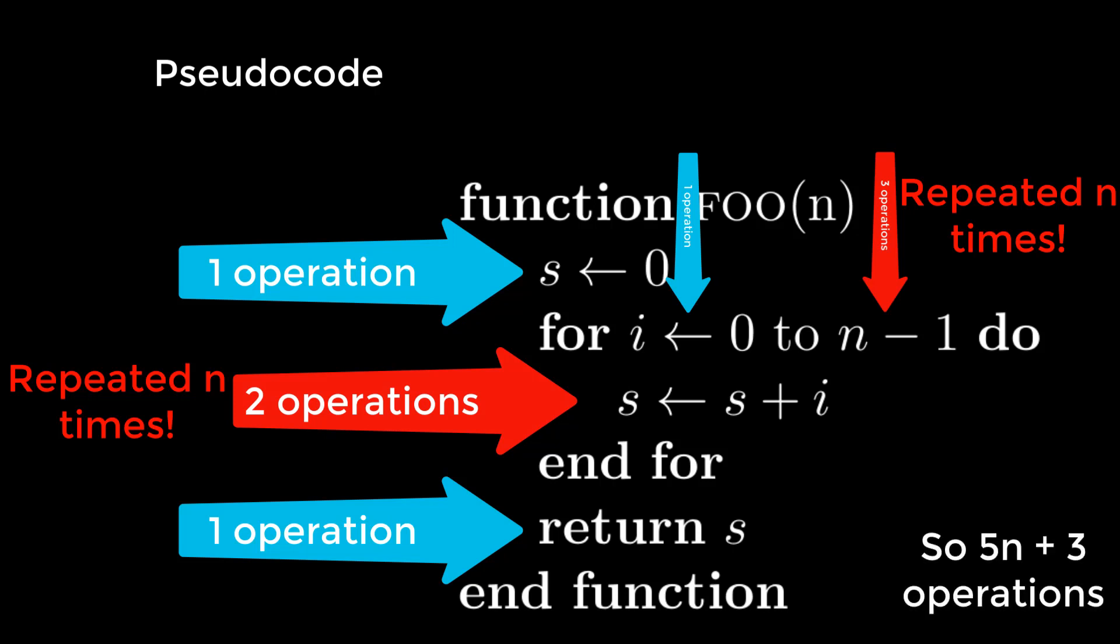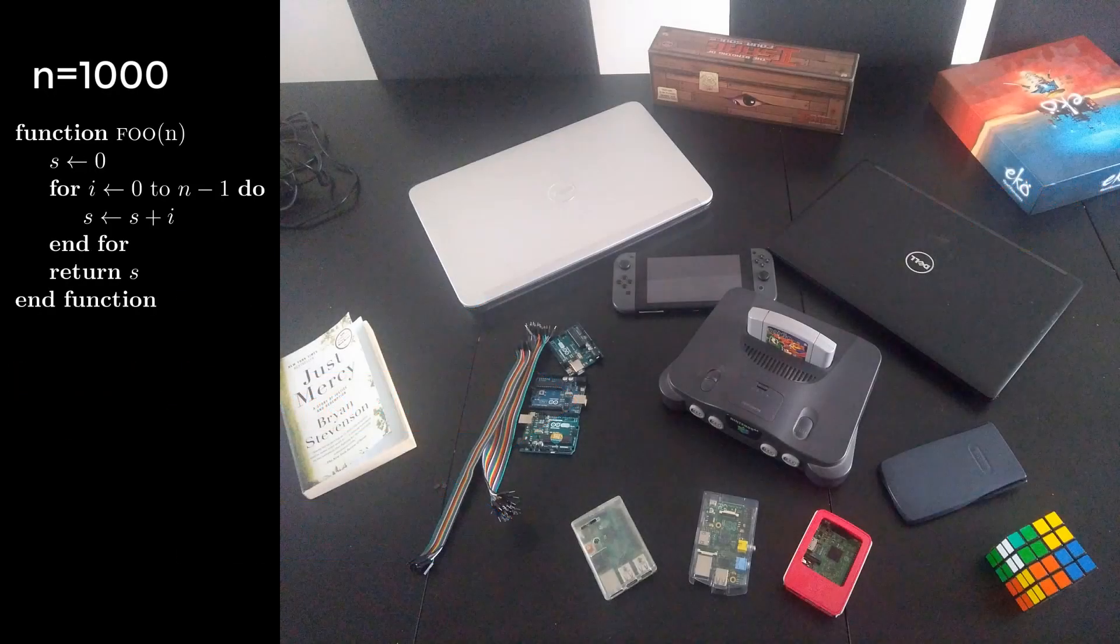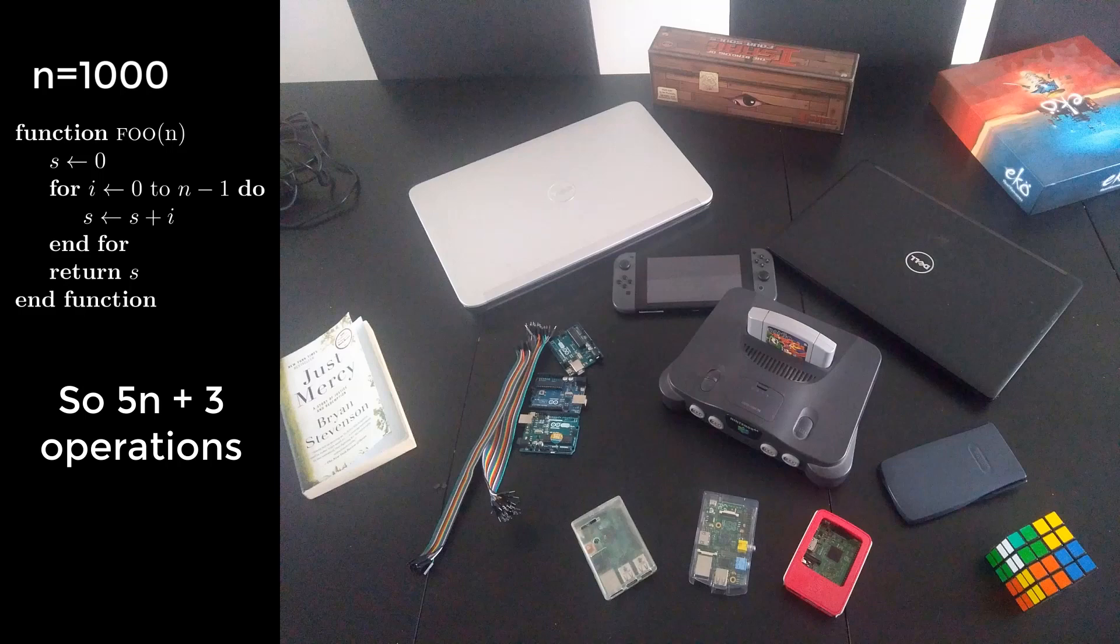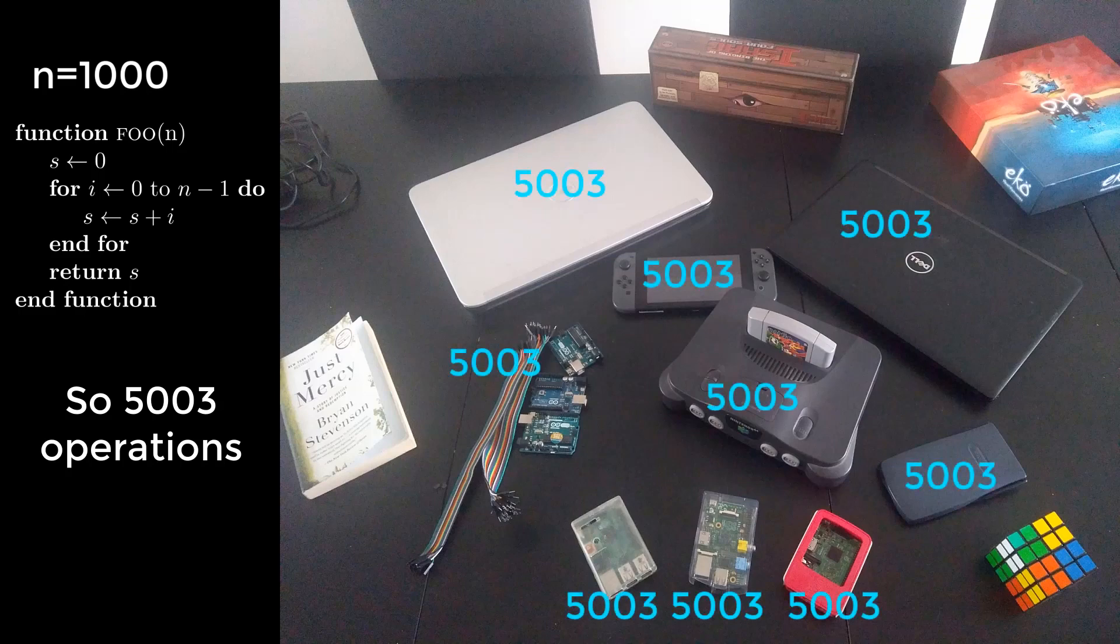We get 5n plus 3 operations in total. And that's great, because no matter what hardware I run it on now, whether it's my old laptop or my new laptop or my N64, 5n plus 3 operations for n equals 1000 gets me 5003 operations on any of these machines. On my laptop, my switch, my Arduino, my Raspberry Pis, it does not matter.